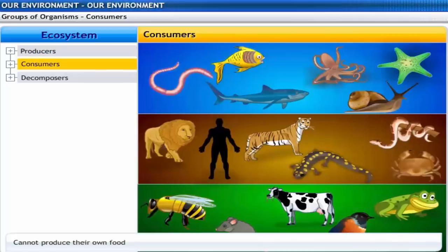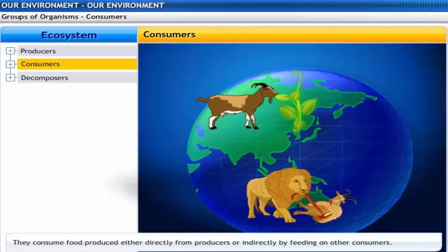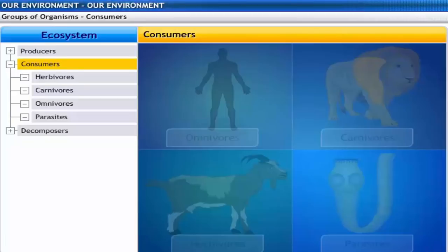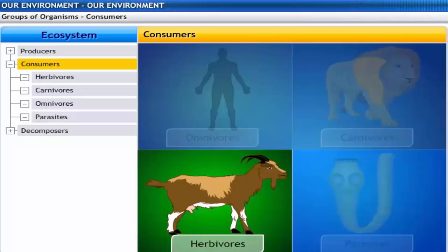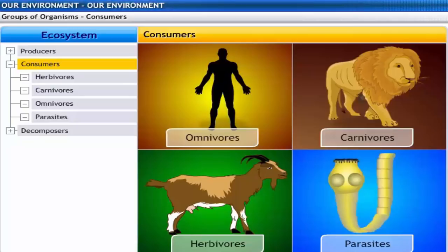Consumers are organisms that cannot produce their own food and depend on producers for their food. Consumers are known as heterotrophs. They depend on autotrophs for their food. These organisms consume the food produced either directly from the producers or indirectly by feeding on other consumers. Consumers can be classified as herbivores, carnivores, omnivores, and parasites.